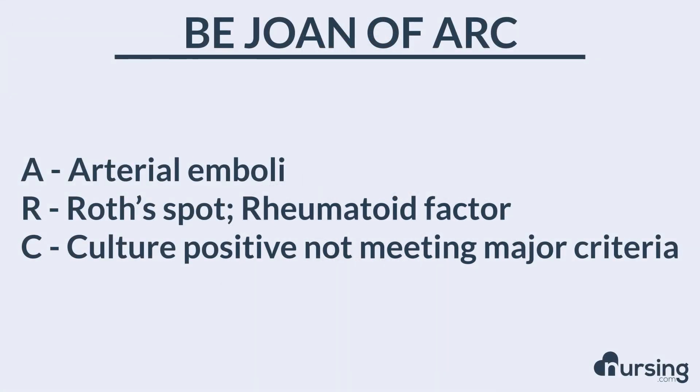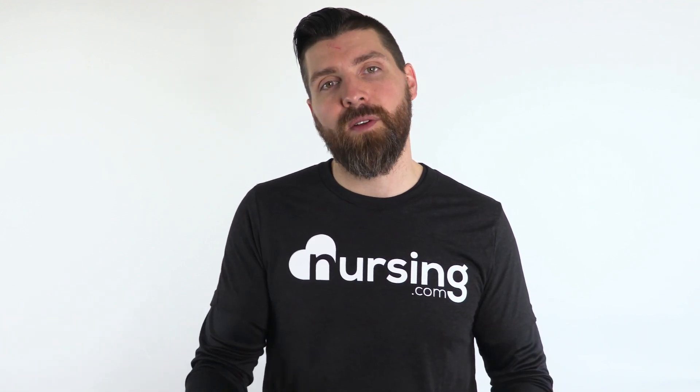Finally, C is for culture — a culture that is positive but doesn't meet other major criteria. So it could just be a positive blood culture, but some of the other things we've talked about don't exist.